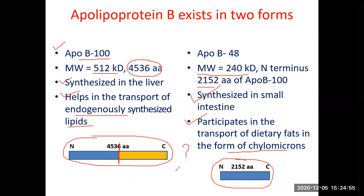The question that comes up is: are there two separate genes for these two proteins, or is ApoB48 a proteolytic product — a product obtained after proteolytic cleavage of ApoB100? The answer is that they are not synthesized by two different genes; they are coded by a single gene. ApoB48 and ApoB100 arise from the same gene by an altogether different mechanism, which is called RNA editing.